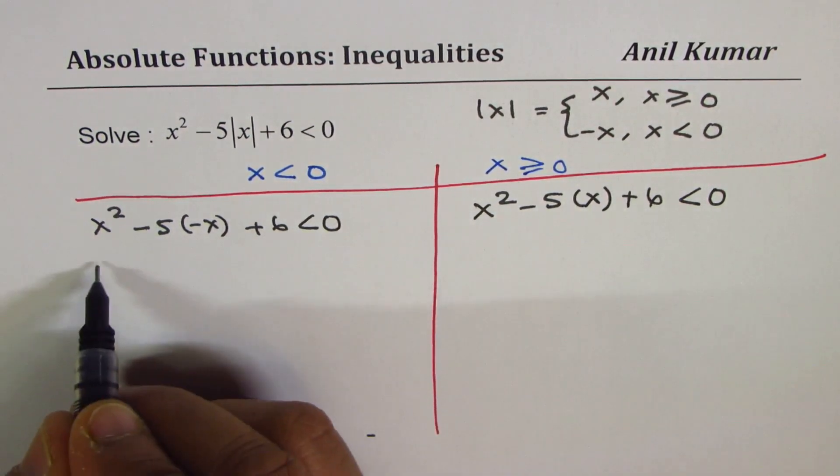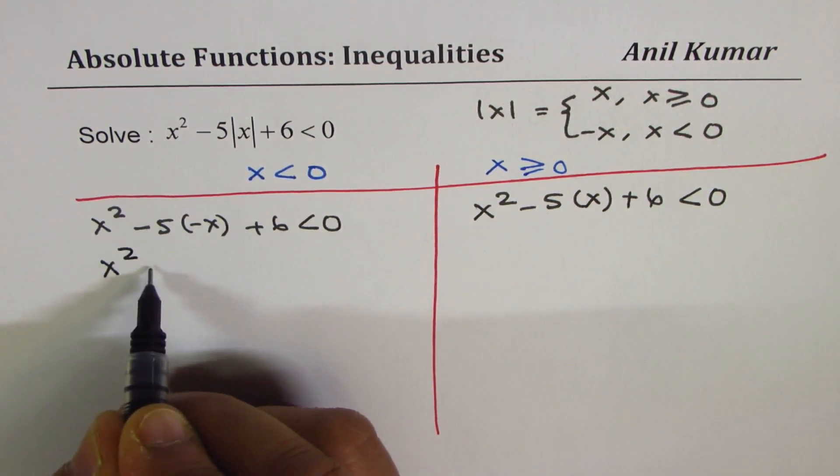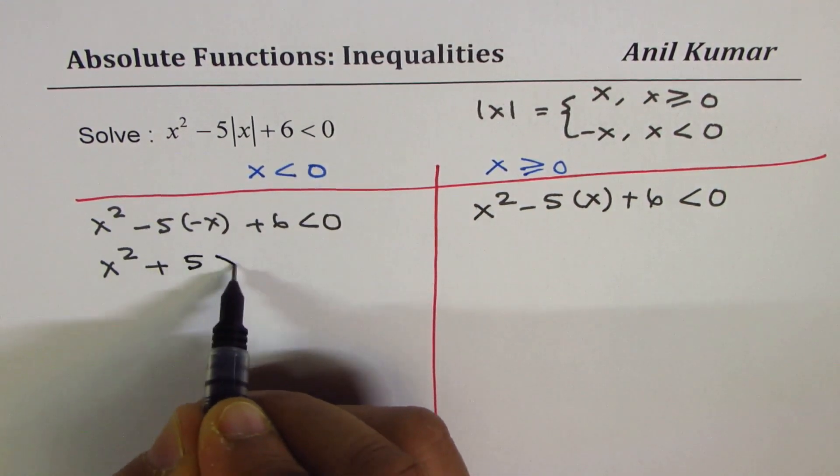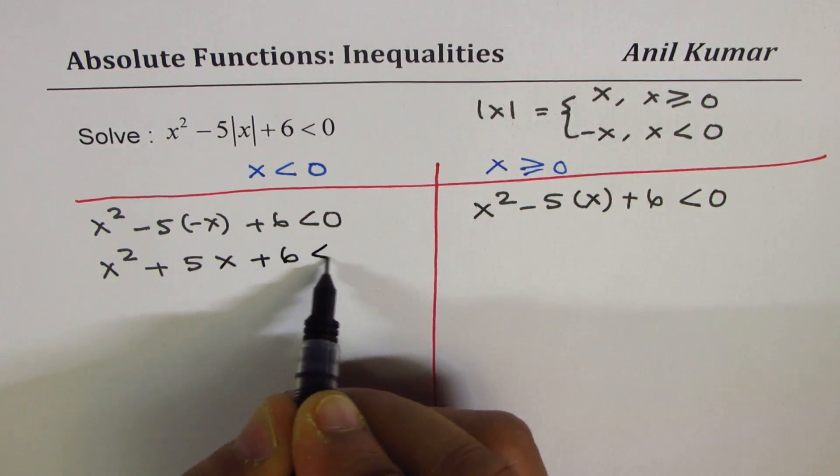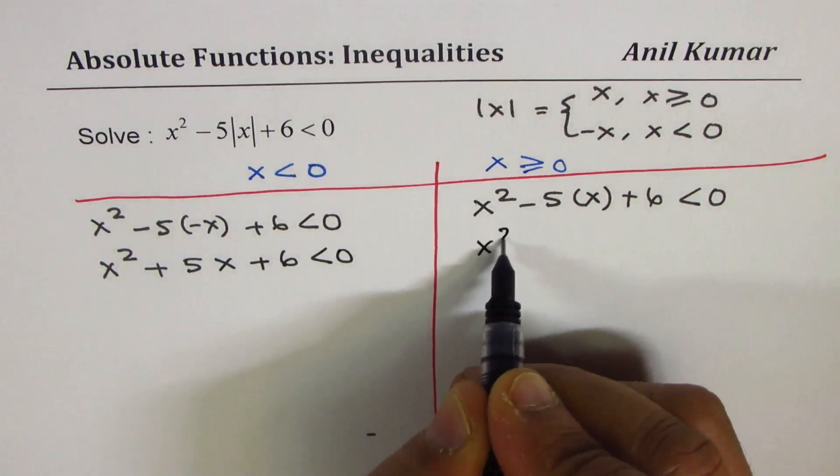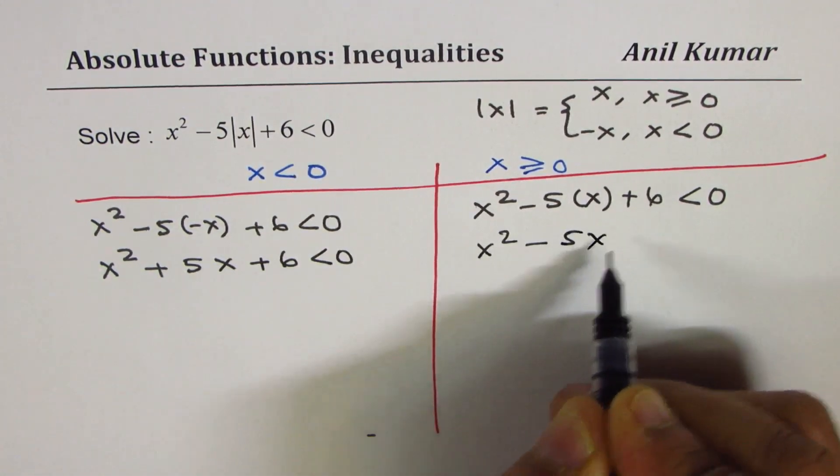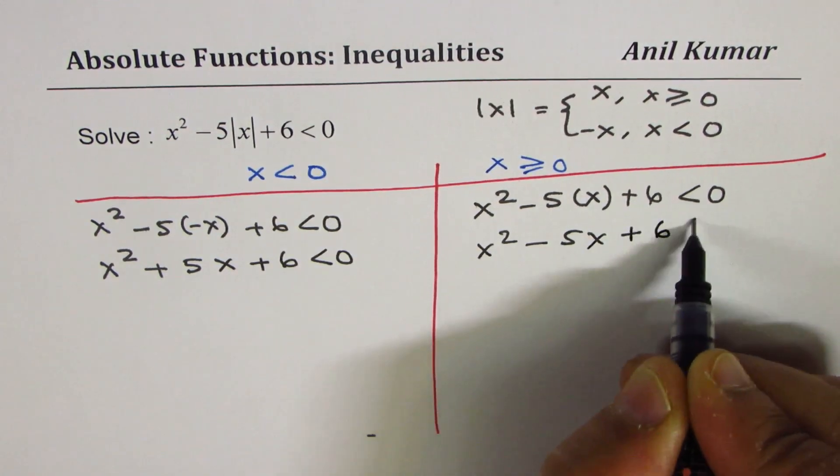I think it is simpler now. We have x squared plus 5x plus 6 less than zero. Here, we have x squared minus 5x plus 6 less than zero.